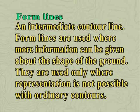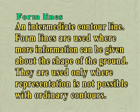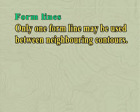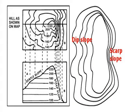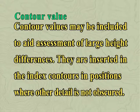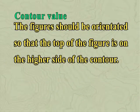Where an index contour coincides with an area of much detail, it may be shown with a normal contour line. Form lines are intermediate contour lines used where more information can be given about the shape of the ground; they are used only where representation is not possible with ordinary contours, and only one form line may be used between neighbouring contours. Slope lines may be drawn on the lower side of a contour line, for example along a re-entrant or in a depression, and are used only where necessary to clarify the direction of slope. Contour values may be included to aid assessment of large height differences and are inserted in index contours so the top of the figure is on the higher side.